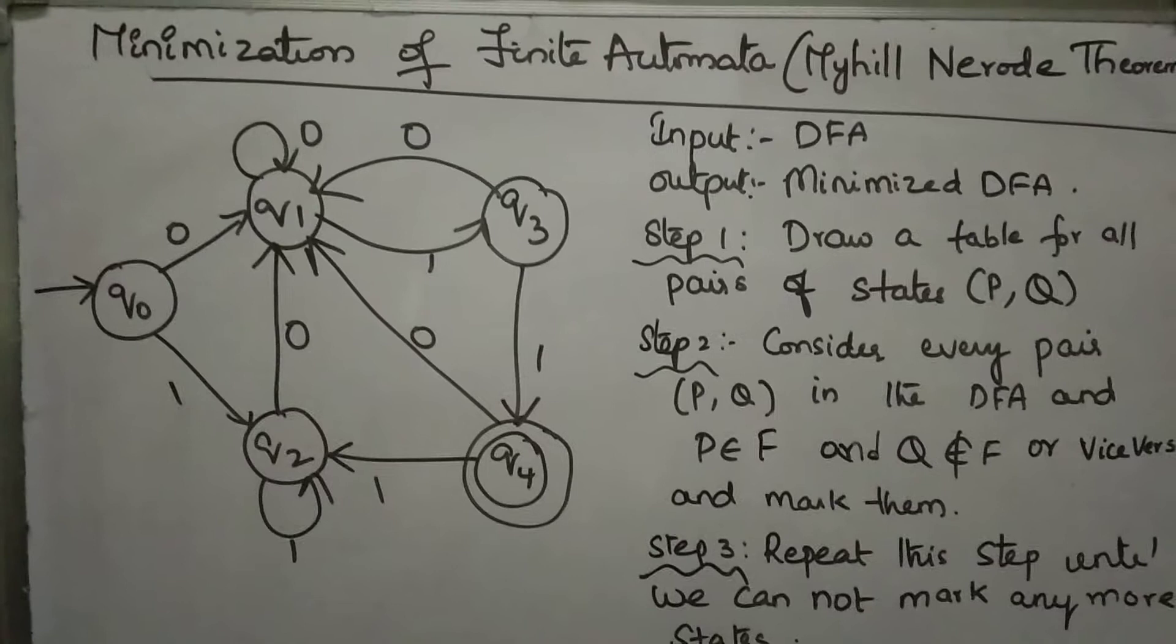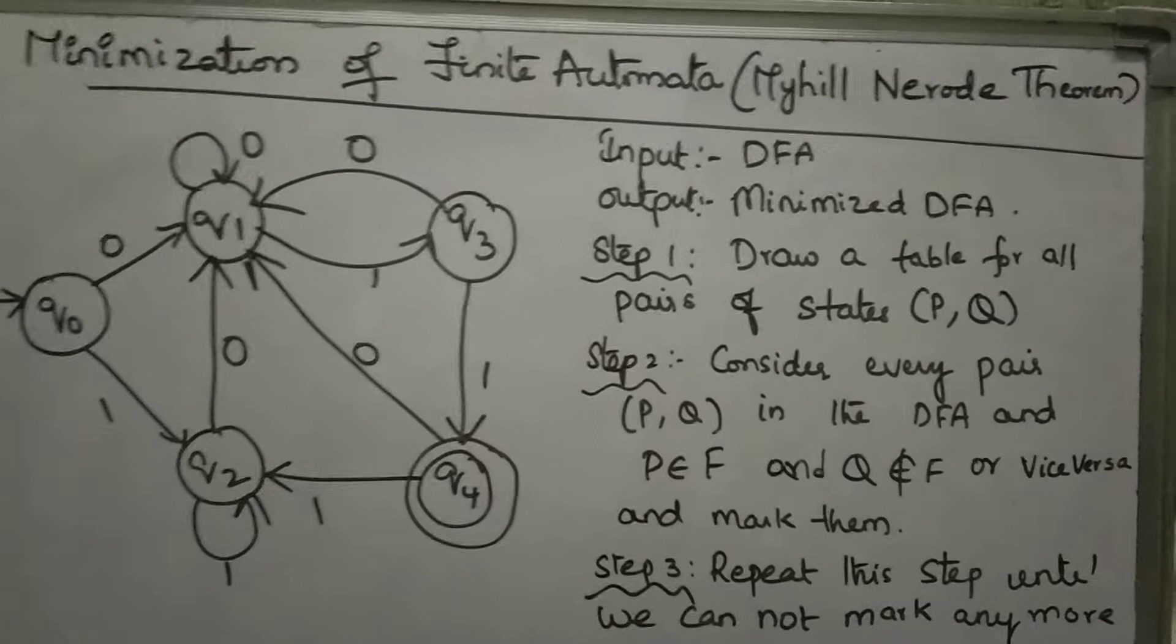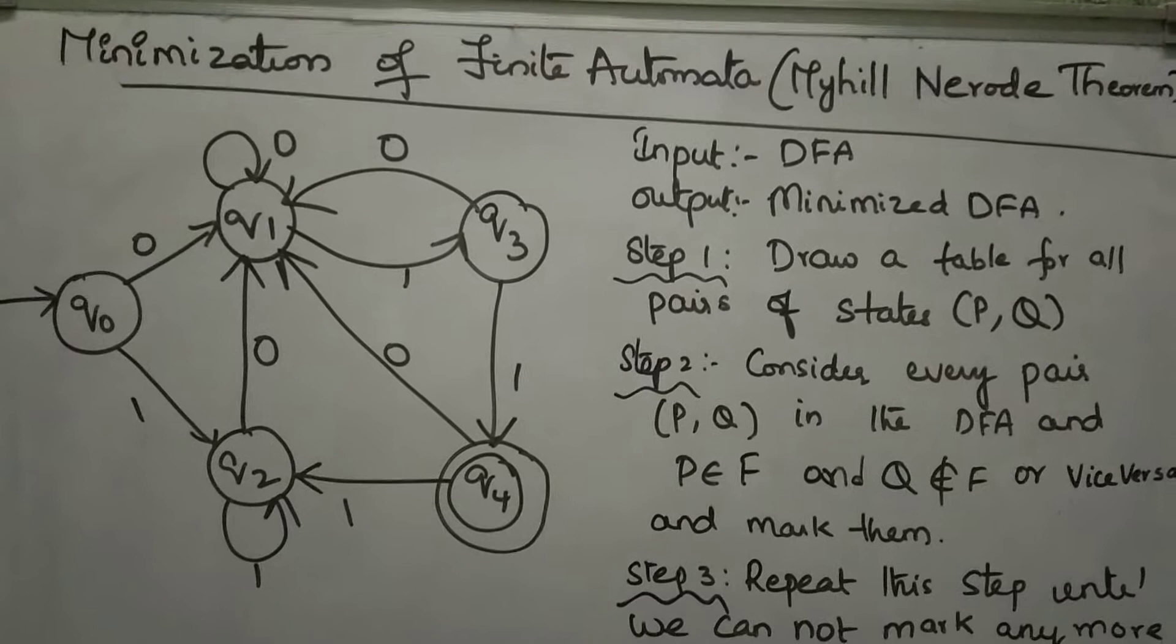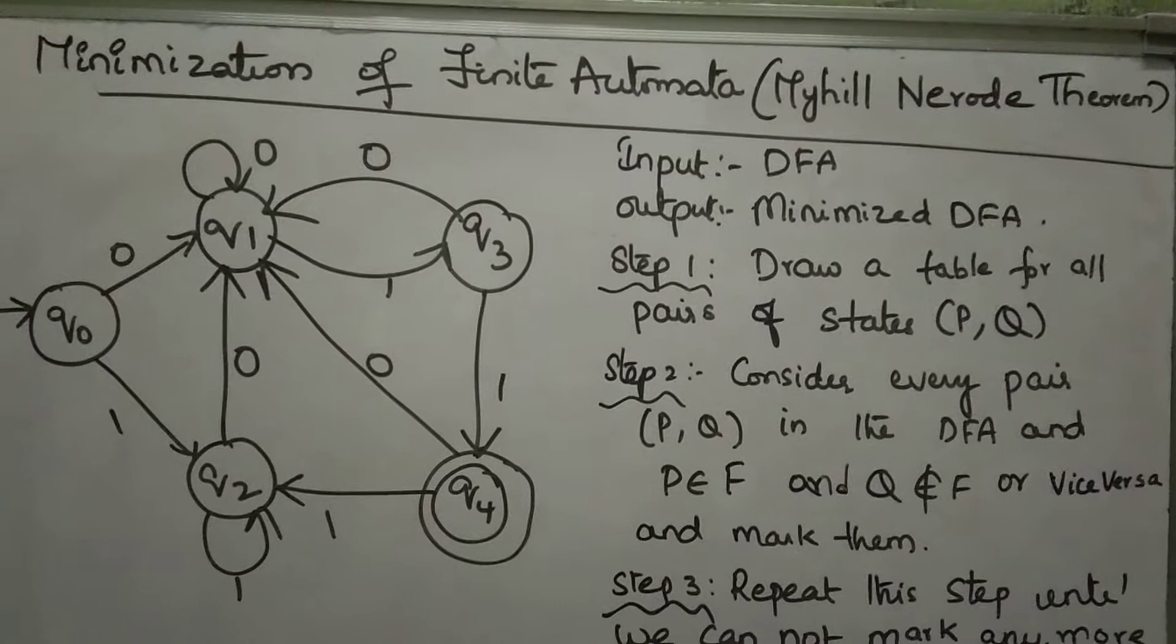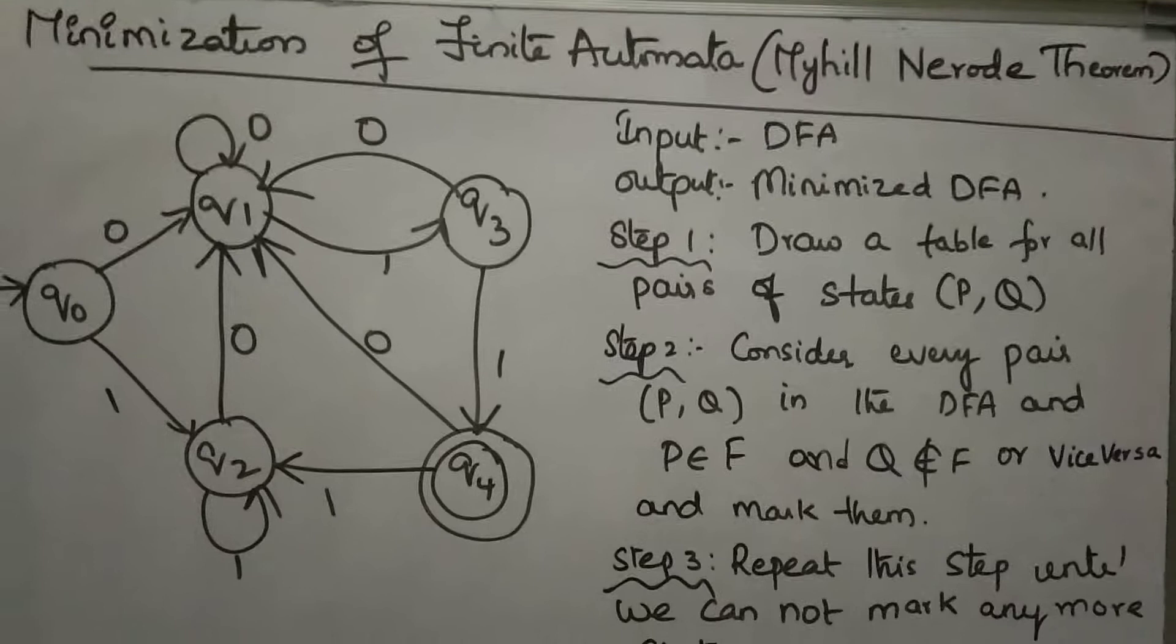Hello friends, in this video we will learn how to minimize the finite automata using Myhill-Nerode theorem. Myhill-Nerode, these two persons worked in University of Chicago in the year 1956 and they gave one theorem that is Myhill-Nerode, John Myhill and Anil Nerode, which is useful for finding whether the language is regular or not and also for minimization of finite automata.